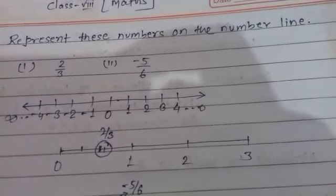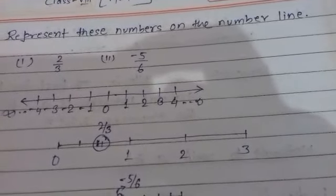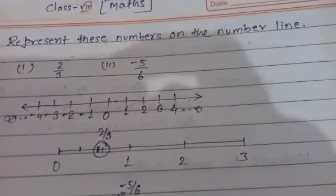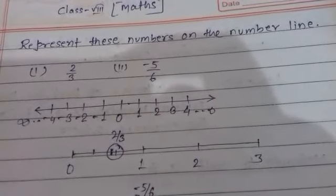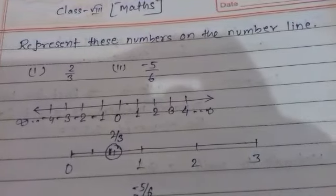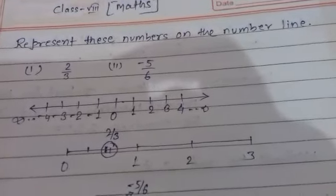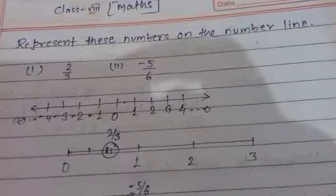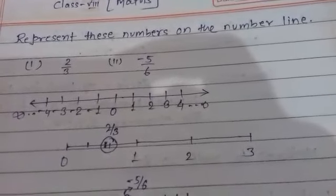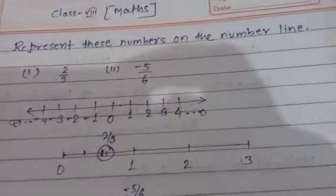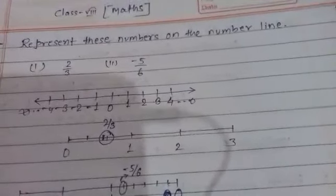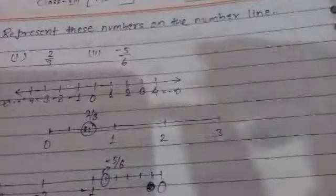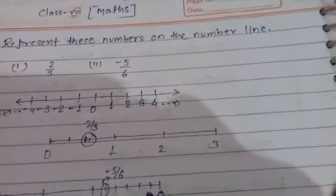Then first we draw a number line. As you know, a number line is a line on which we represent rational numbers and irrational numbers also. We are not going to represent a large number line, but simply a part of the number line which is required.